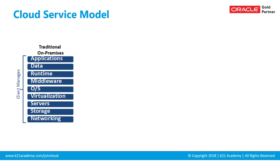On the extreme left-hand side, you have the traditional on-premise deployment or IT setup, where networking, storage, servers, virtualization, operating system, middleware, applications, and data — the entire thing — is managed by the customer in their own premises. This was the common model until around 2003–2006, before Amazon came along.